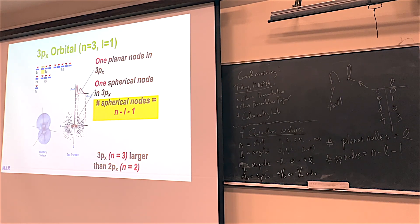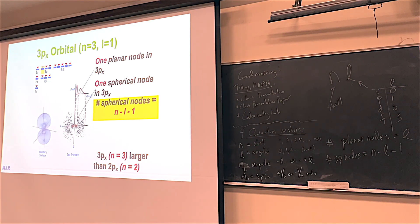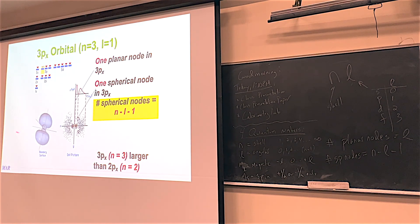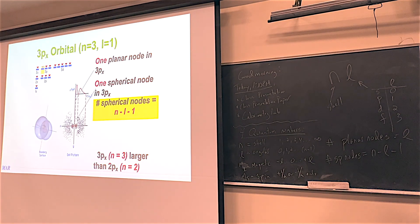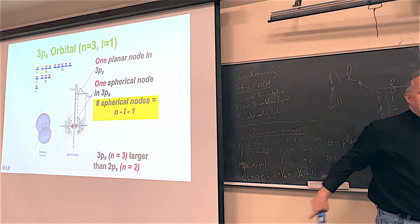Student question: These clouds where electrons are residing — was it all derived from just math, or did they observe any of this? Both, which is really cool. The math came first. These big globes are the probability of where the electron is more than 90% of the time. So like me lecturing right here — most of the time I'm right here, but once in a while I'm somewhere else. So it's where the electron is most of the time in the 3PX orbit.